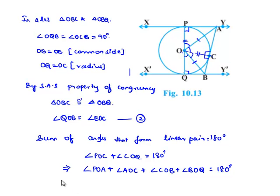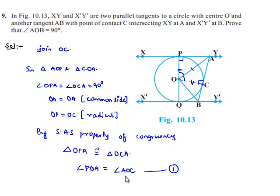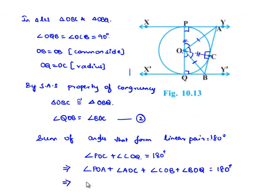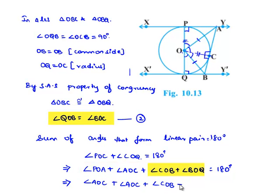Substituting from equation 1, angle POA equals angle AOC, so we replace angle POA with angle AOC. Substituting from equation 2, angle BOQ equals angle BOC, so we replace angle BOQ with angle COB. This gives: angle AOC plus angle AOC plus angle COB plus angle COB equals 180 degrees, which simplifies to 2·AOC plus 2·COB equals 180 degrees.